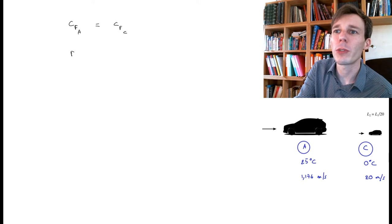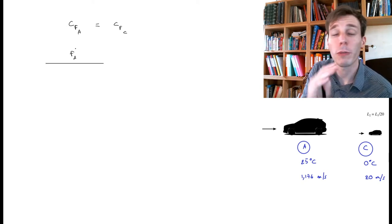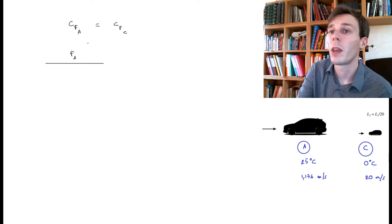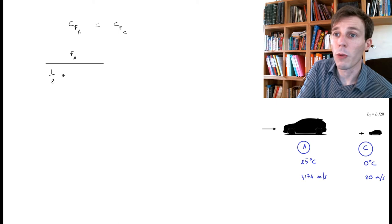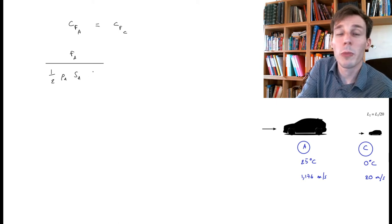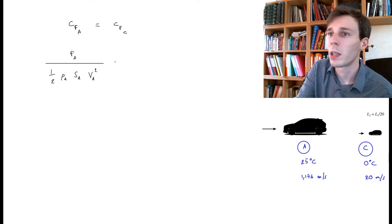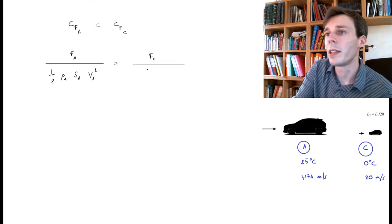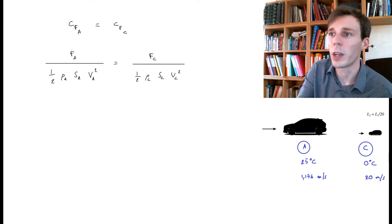So what is this equal to? This is equal to the force that you measure on the real car. And this force can be the horizontal force, vertical force, in any angle, as long as you use the same definition for both of the two cars. The force induced by the fluid on the car divided by one half of ρ, the density of the fluid around the car, multiplied by a representative area on the car, multiplied by velocity squared, like this. And this is equal to the same thing for the model C. And this is FC divided by one half of ρC, SC, VC squared.